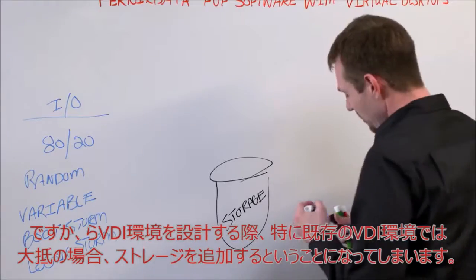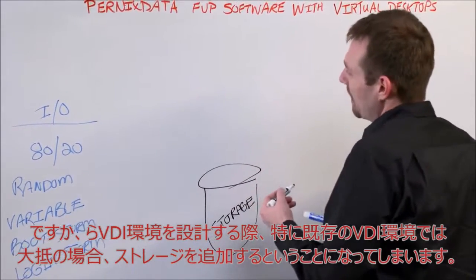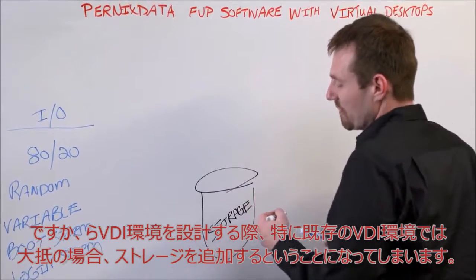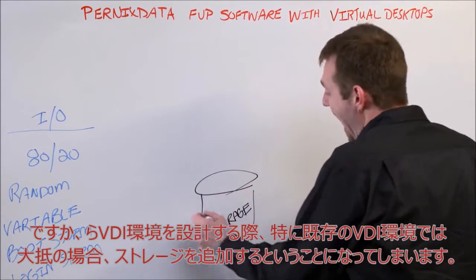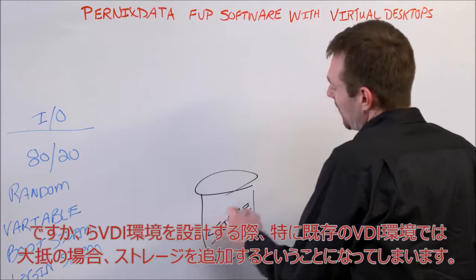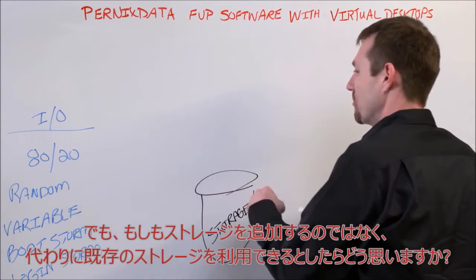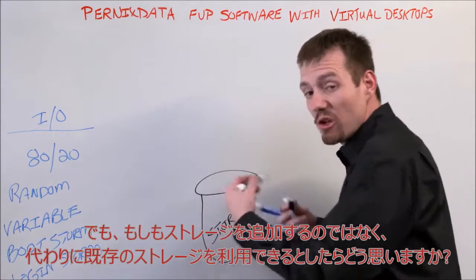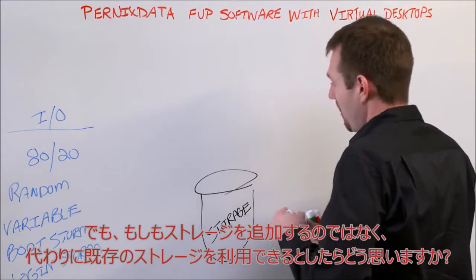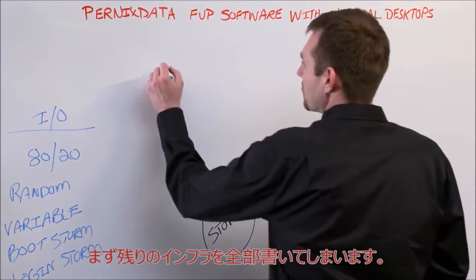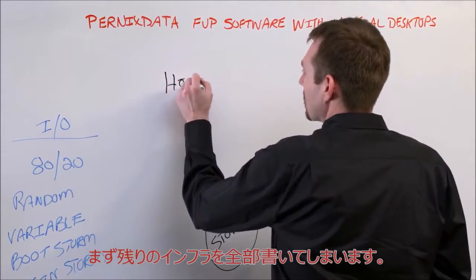When we're designing for virtual desktops, typically what will happen in an existing virtual environment is that we'll add an additional storage array. But what if I told you we didn't have to do that? We could continue to use our existing storage array instead.